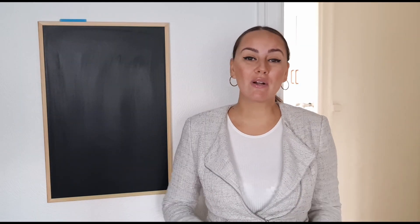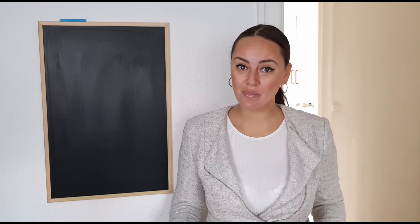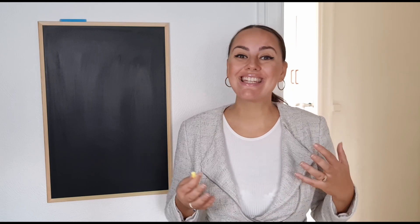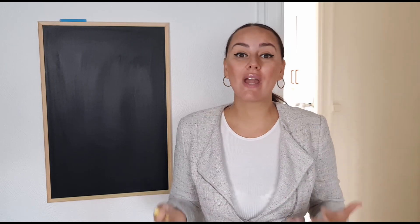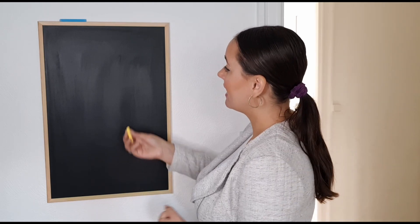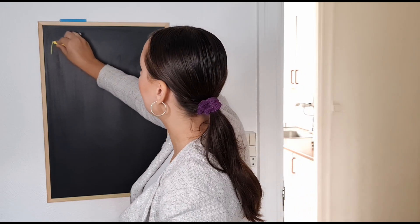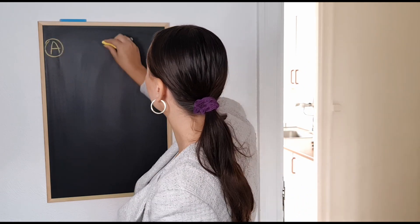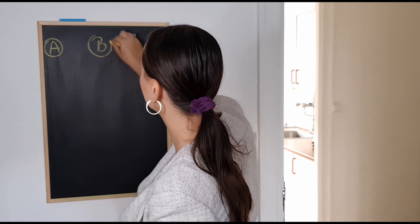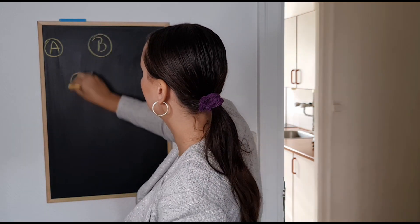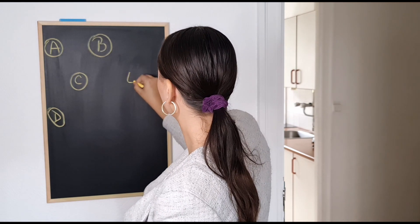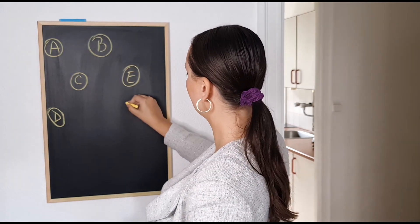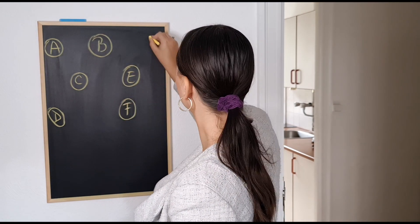In order to perform Kruskal's algorithm, I'm going to need to create a connected edge-weighted graph. We do that the following way. First, I'm going to need to create the vertices. We have the first vertex as A, then we have B, C, D, E, F, and G.